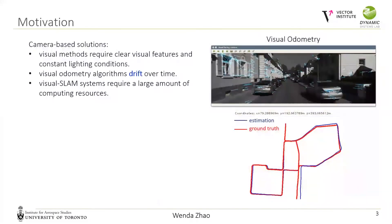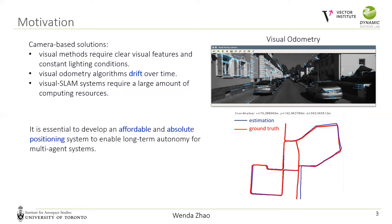Since satellite-based navigation systems are unreliable in urban scenarios and unavailable for indoor spaces, camera-based approaches are often used for robot navigation. However, visual methods require clear visual features and constant lighting conditions. As shown on the right, visual odometry algorithms accumulate errors and drift over time. With loop closure, visual SLAM systems can correct the drift, yet they require a large amount of computing resources and need to update the map to account for changes in the environment. Therefore, it is essential to develop an affordable and absolute positioning system to enable long-term autonomy for multi-agent systems.